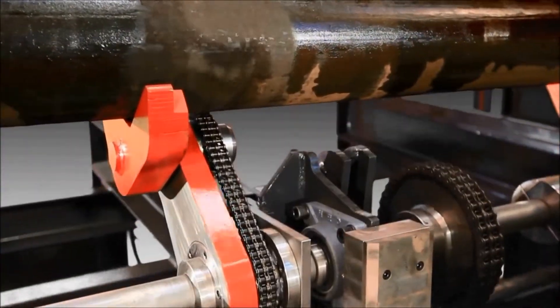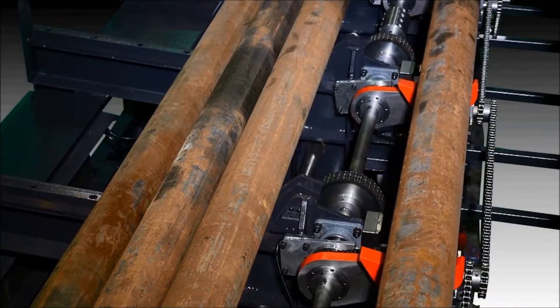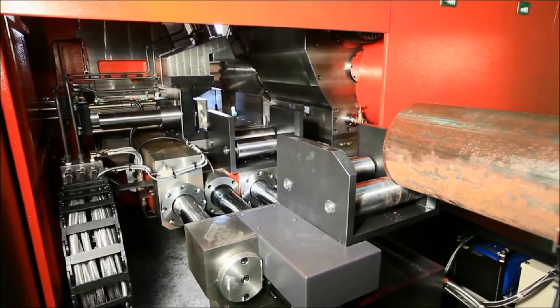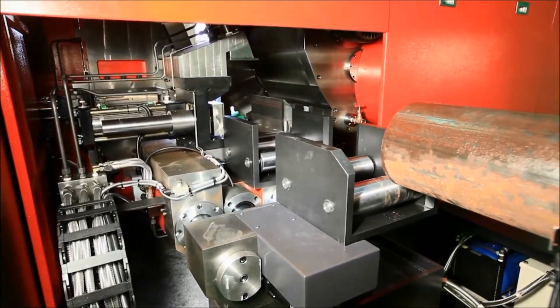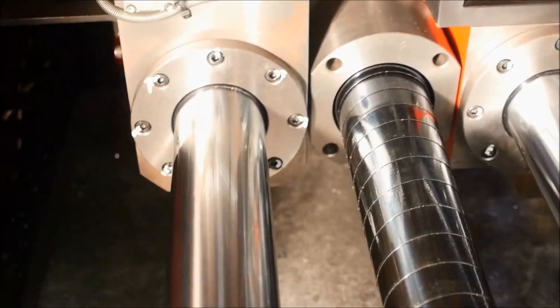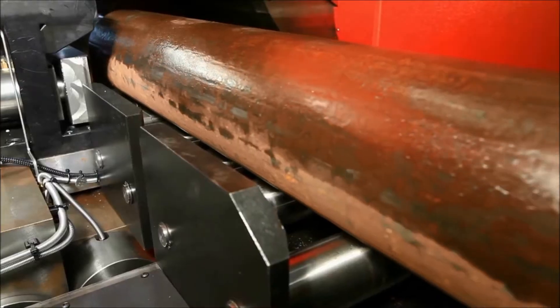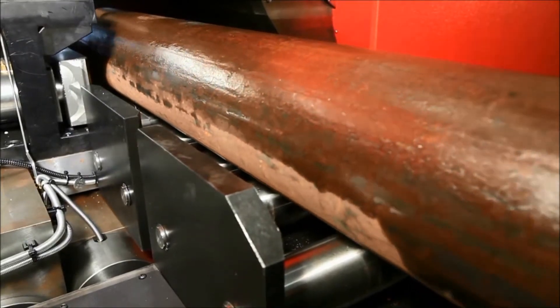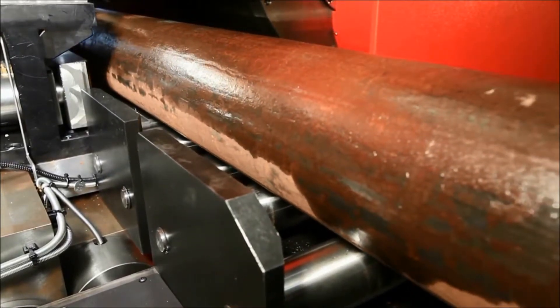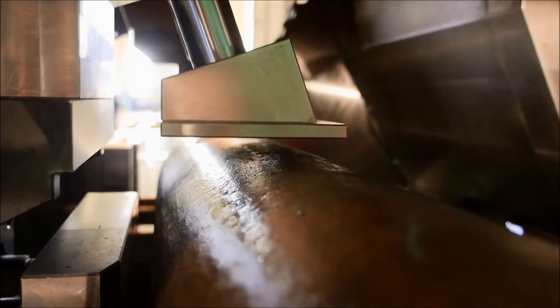An automatic bar loader facilitates continuous cutting by automatically loading bars into the saw. The feed mechanism uses a ball screw to assure accurate part indexing. Top and side clamps hold the material securely to allow for aggressive cutting.